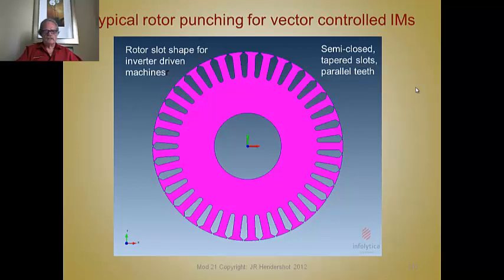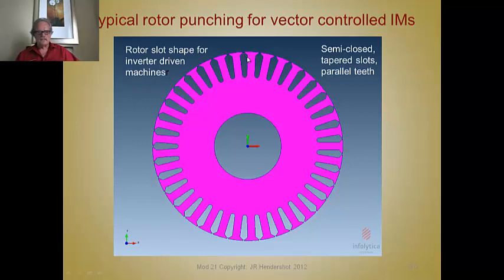Here's a picture of a typical rotor punching designed for a vector-controlled induction motor or inverter duty. Notice the teeth are parallel, the slots are tear-shaped, and the slot openings are semi-closed. The tooth tips are quite thick, and the purpose is to set the angle of the two tips at approximately 45 degrees. That gives a lot of strength in the throat so that the bars can be restrained, and at higher speeds the centrifugal force on the bars — which might cause them to bow or bend — will hopefully be restrained by these tooth tips.